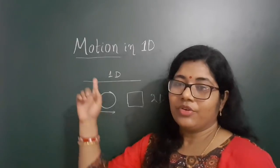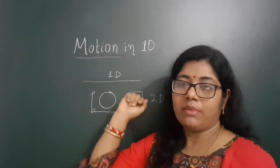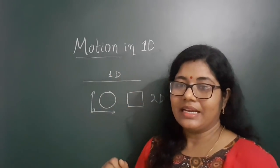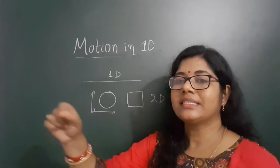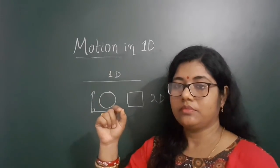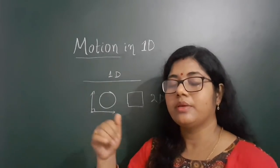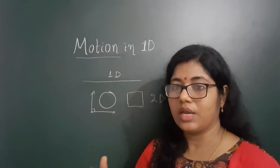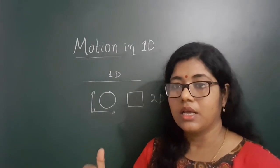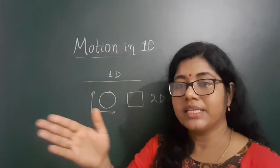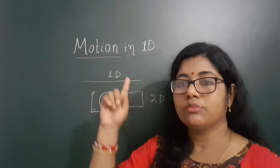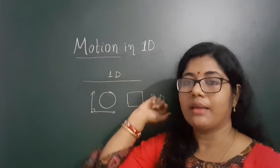So if you consider motion in one dimension, it means that a body moves in a straight line path. Maybe the frame of reference maybe it will be one dimension, maybe two dimension, maybe three dimension. But if a body moves in a straight line path, then its motion is considered to be one dimensional.